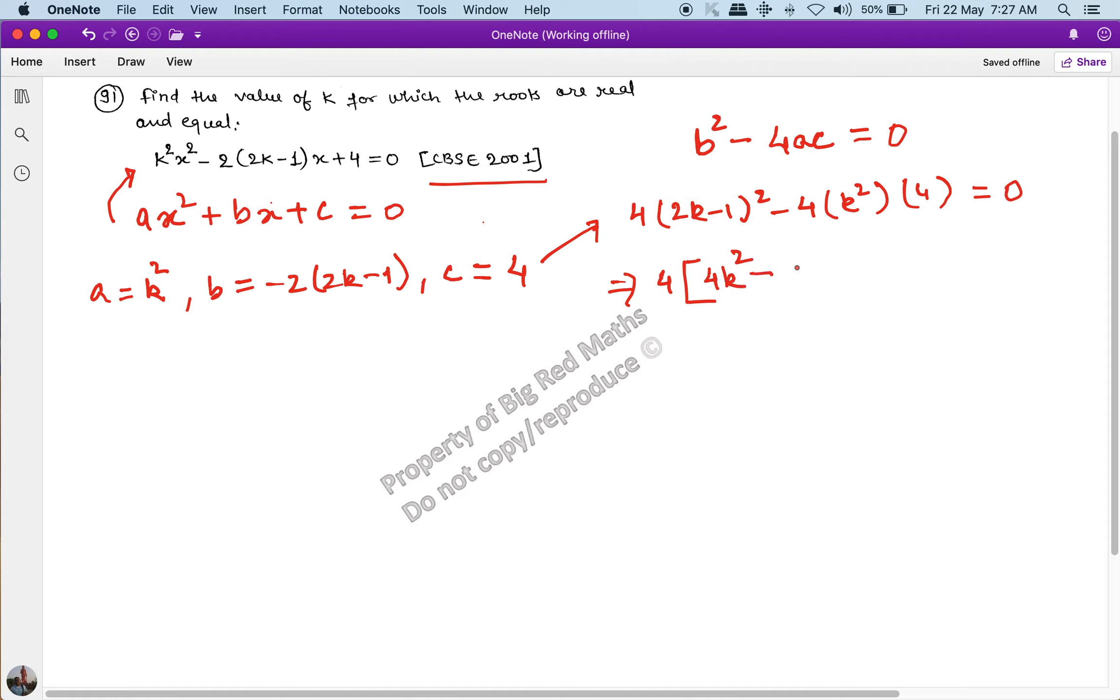This equals 16k² - 16k + 4 - 16k² = 0. The 16k² terms cancel out, and we get 16k = 4.